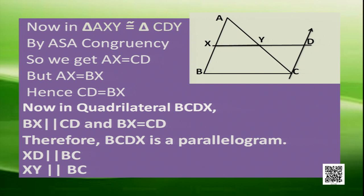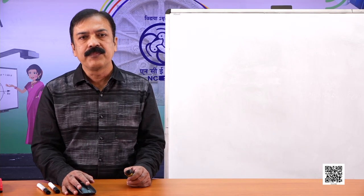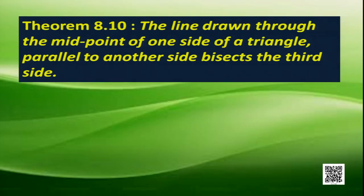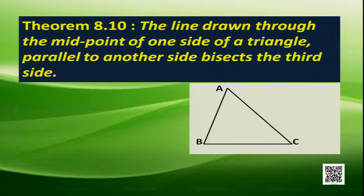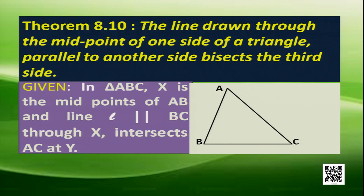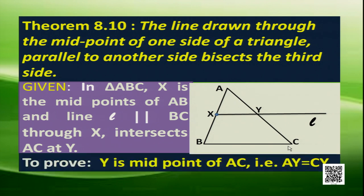Now let's look at the converse of the Midpoint Theorem. The converse states that the line drawn through the midpoint of one side of a triangle, parallel to another side, bisects the third side. In triangle ABC, X is the midpoint of AB and line L is drawn through X parallel to BC. We have to show that if this line intersects AC at Y, then Y is the midpoint of AC.